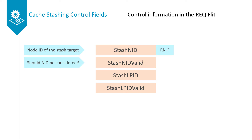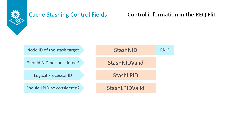The Stash LPID field indicates the logical processor ID within an RNF. This field allows for a lower level cache, like an L2 cache, to be specified as a stash target. The Stash LPID Valid field signals whether the value in the Stash LPID field should be considered when doing the stash.